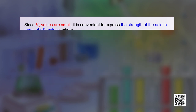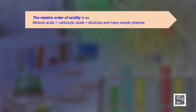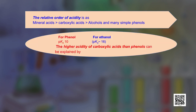The general trend in acidity is: mineral acids are the strongest, followed by carboxylic acids, which are stronger than alcohols and many simple phenols. For comparison, phenol has pK_a of 10 while ethanol has pK_a of 16, confirming that carboxylic acids are more acidic than phenols.